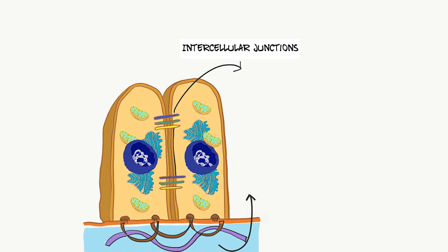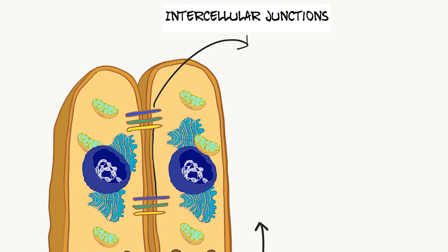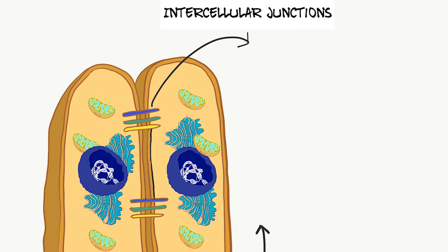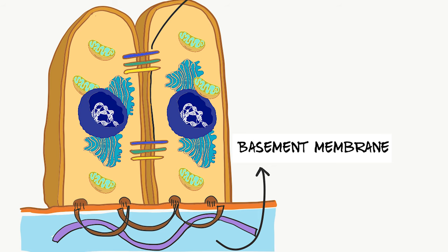The lateral surface of an epithelial cell has numerous intercellular junctions forming the so-called attachment apparatus, which acts as a selective barrier to allow or block solutes into or outside of the cell. Lastly, the basal domain sits on the basement membrane, attaching the cells to the underlying vascular connective tissue.